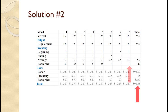The final cost of this plan is $9,885 as compared to $9,765 when the higher demand was in period 6. The higher cost is because it is more expensive to back order production than keep it in inventory in this example.